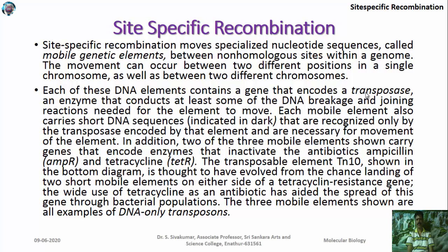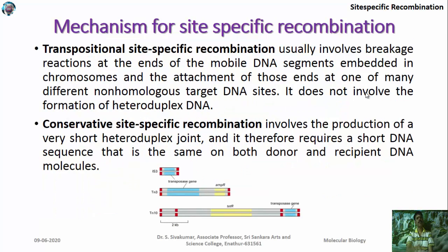They also have some enzymes which can inactivate some antibiotics like ampicillin, tetracycline, etc. The transposable elements, for example Tn3 and Tn10, have evolved to have two genes, one of which is known as the tetracycline-resistant gene. Site-specific recombination is achieved by the movement of mobile genetic elements, or jumping genes, or transposons. The fragment which is transposed from one place to another uses an enzyme known as transposase.